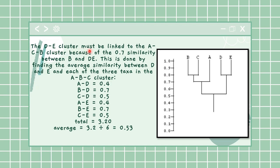You can see that I have joined A to B and C. We know that D and E cluster must be linked to A because that was the next highest after 0.7.